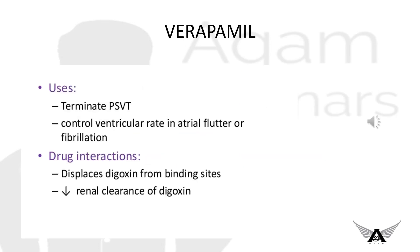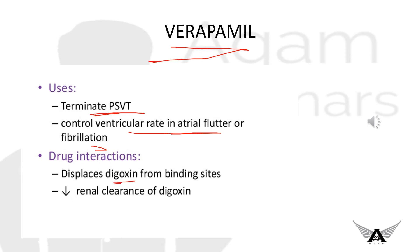Calcium channel blockers such as verapamil are used to terminate paroxysmal supraventricular tachycardia and to control the ventricular rate in atrial flutter or fibrillation. Drug interaction: never use digoxin with verapamil because it displaces digoxin from binding sites and also decreases the renal clearance of digoxin.